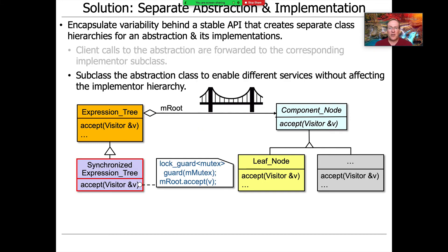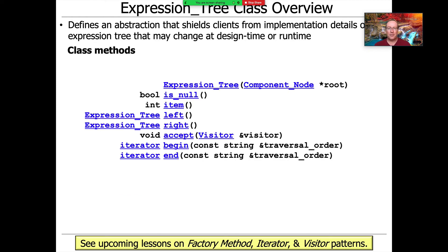Then we want to be able to subclass the abstraction class to enable different services without affecting the implementer hierarchy. Here's how we could make a synchronized expression tree or an instrumented expression tree. None of that changes anything on the right-hand side. And likewise, we want to be able to plug in different right-hand sides. How are we going to pull all this off?